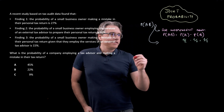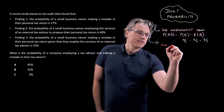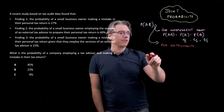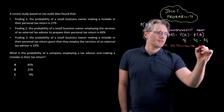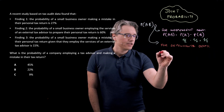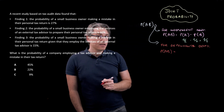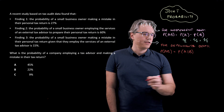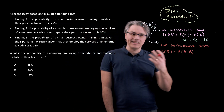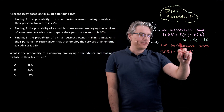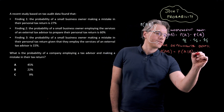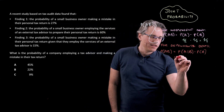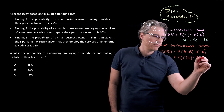When dealing with dependent events — where whether one occurs will have an impact on the other occurring — we have a different formula. The probability of A and B happening is the probability of A given B has occurred (the vertical line meaning 'given') times the probability of B. Or equivalently, the probability of B given A times the probability of A.